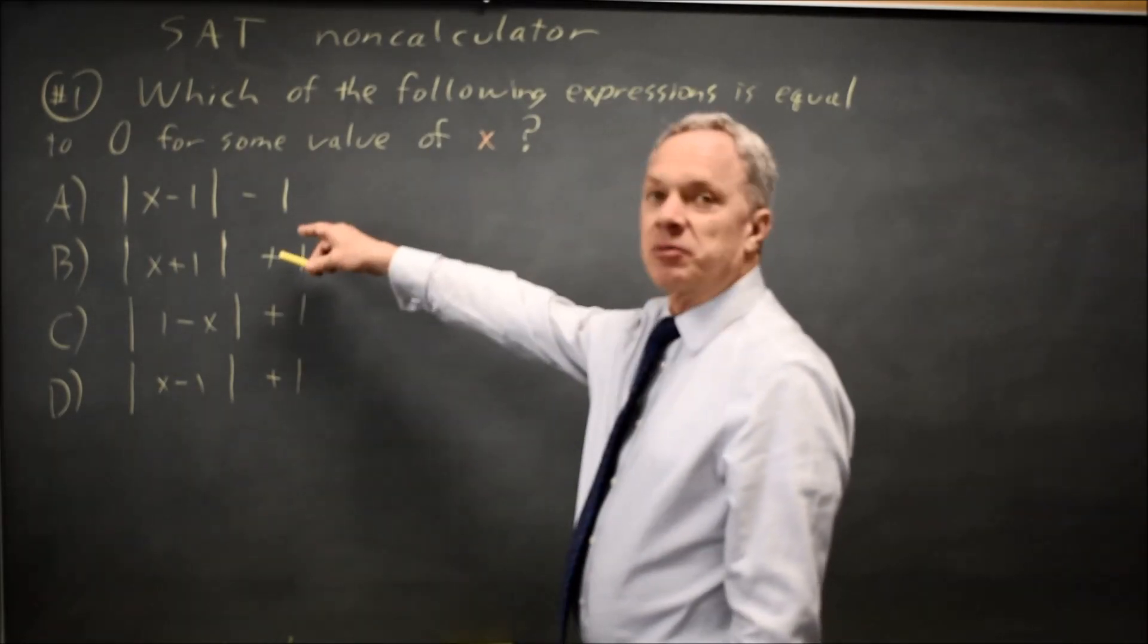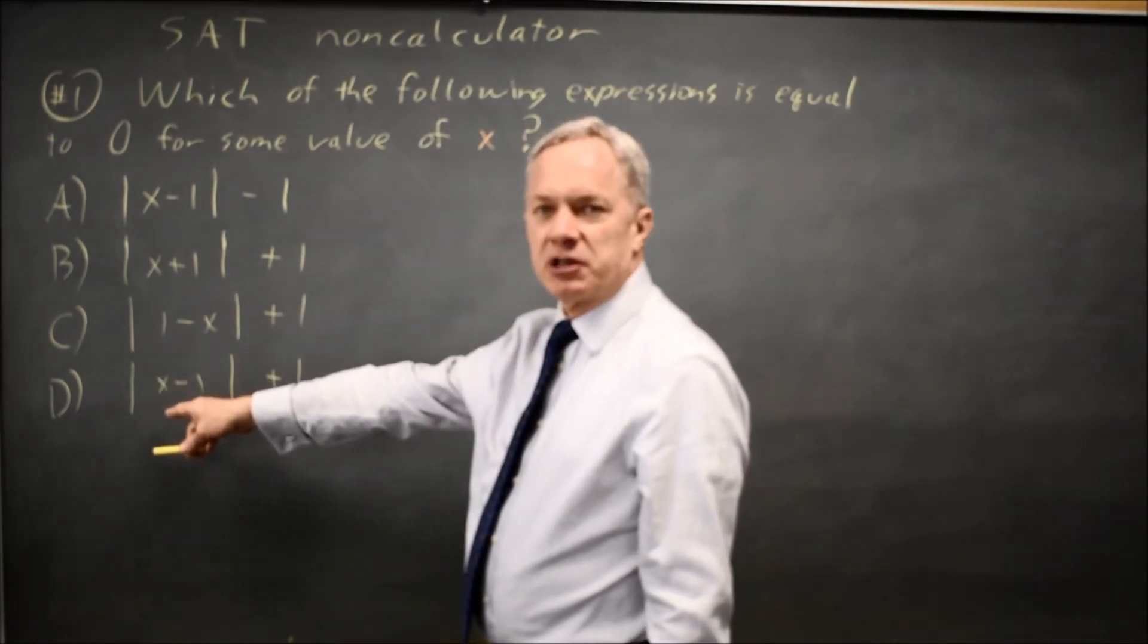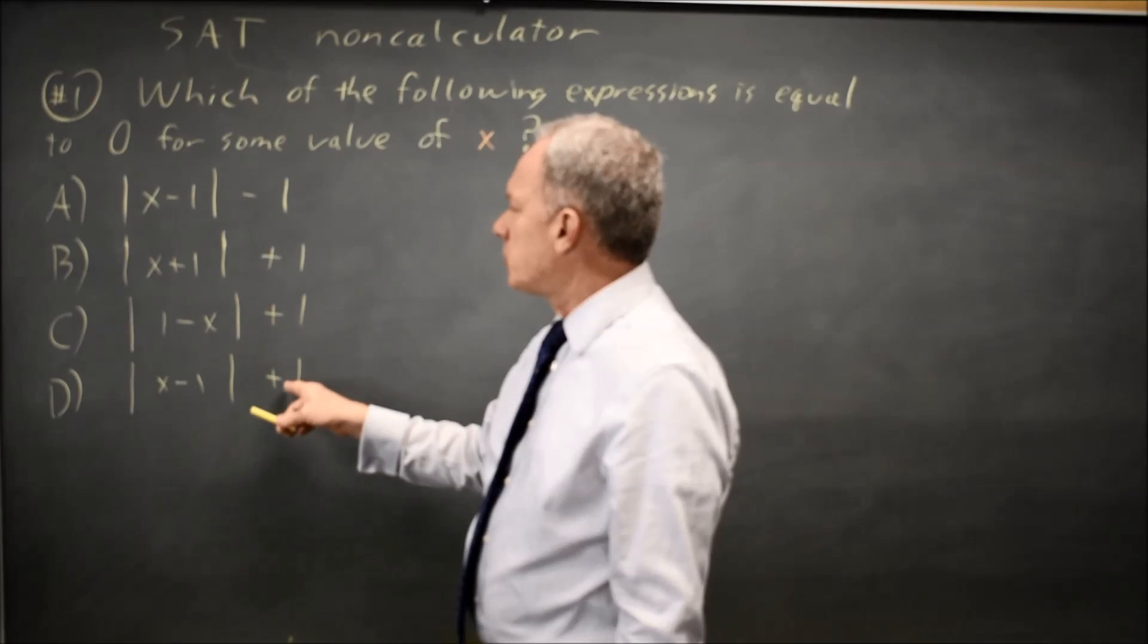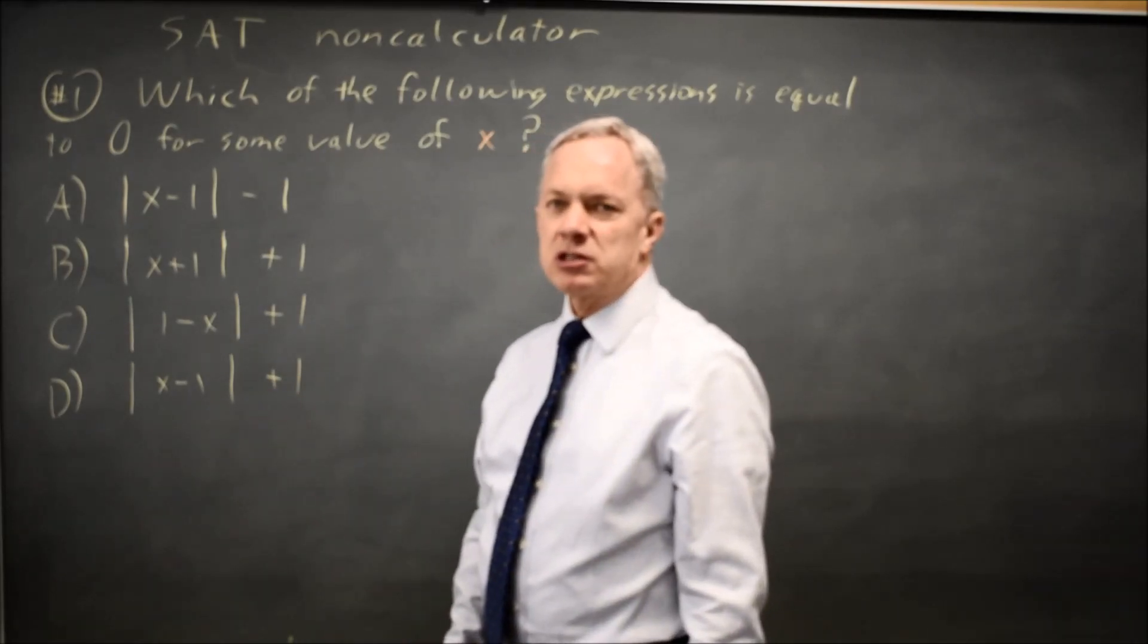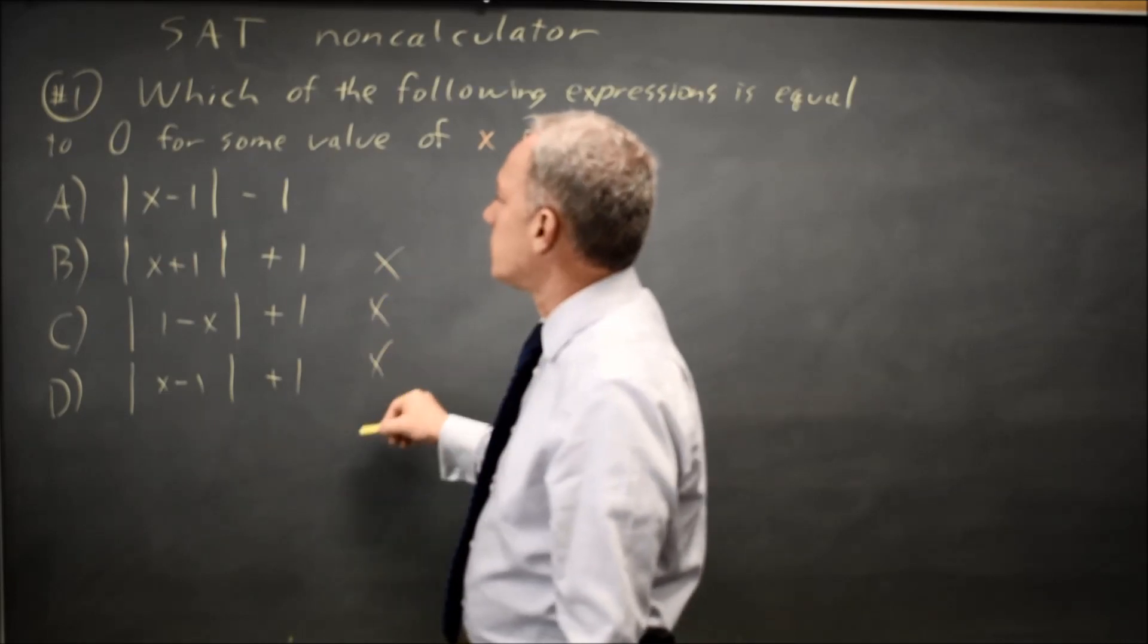One option is to think about this abstractly. The absolute value is never negative. If we add one to our absolute value, the smallest value we could get would be one, so these three cannot be correct.